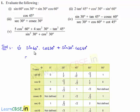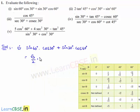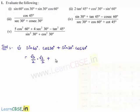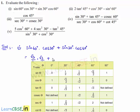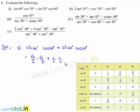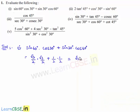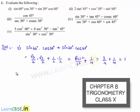From the table we have the value of sin 60° as √3/2, and cos 30° is again √3/2, plus sin 30° is 1/2 and cos 60° is 1/2. This equals (√3/2 × √3/2) + (1/2 × 1/2), which is (√3)²/2² + 1/4 = 3/4 + 1/4.